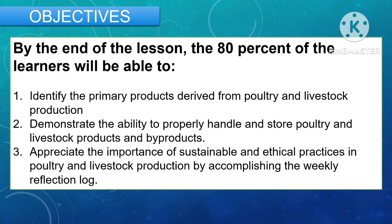For the objectives, by the end of the lesson, 80% of the learners will be able to: first, identify the primary products derived from poultry and livestock production; second, demonstrate the ability to properly handle and store poultry and livestock products and byproducts; and third, appreciate the importance of sustainable and ethical practices in poultry and livestock production by accomplishing the weekly reflection log.